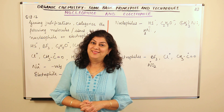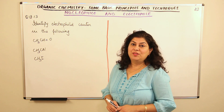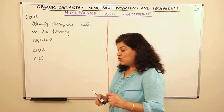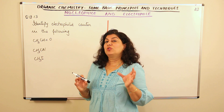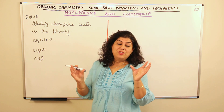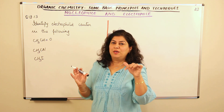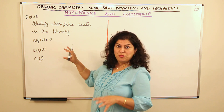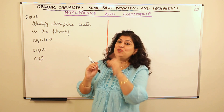Now question 12.13: identify the electrophilic center in the following compounds — CH3CHO, CH3CN, and CH3I. The electrophilic center is an atom with partial positive character in the molecule, usually formed as a result of heterolytic cleavage. The atom bearing the positive charge is the electrophilic center.